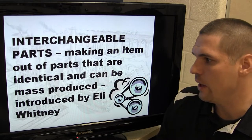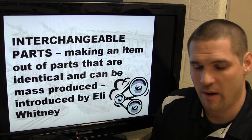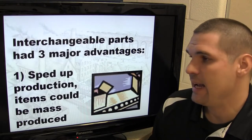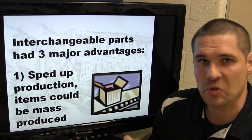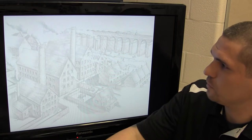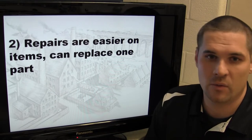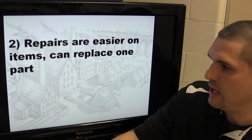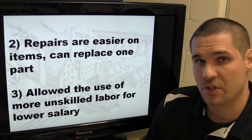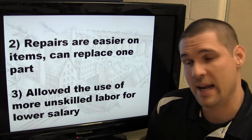Another key advancement was interchangeable parts — making items from identical parts that can be mass-produced. This was introduced by Eli Whitney, also the creator of the cotton gin. Interchangeable parts sped up production enormously, allowing mass production because the same parts could be used across multiple models of goods. Repairs also became much easier: just swap out the bad part for an already-mass-produced replacement. Additionally, this allowed the use of unskilled — and therefore cheaper — labor, since workers didn't need specialized knowledge to fix machinery.